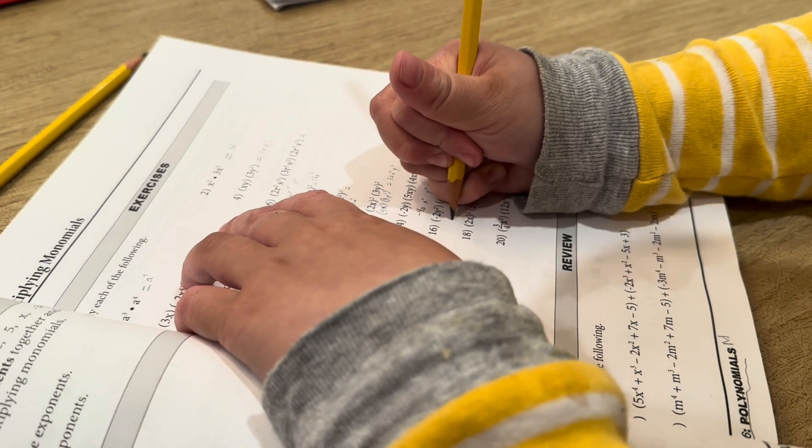3x squared y squared times the quantity of 4x cubed y equals 12x to the fifth y cubed. Y what? Oh, y cubed.